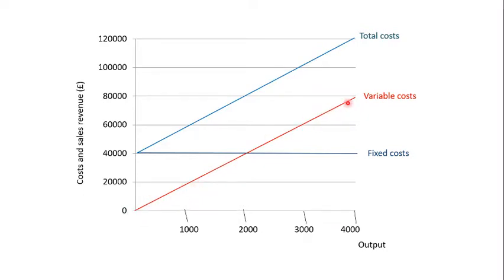Variable costs change proportionally with output — they always start at zero and go upward. Total costs also increase proportionally with variable costs, and are simply fixed costs plus variable costs. At zero cakes, fixed costs of £40,000 plus zero variable costs equals £40,000 total cost, which is why the total cost line starts there. At 2,000 cakes, fixed costs are £40,000 and variable costs are also £40,000, so total costs are £80,000.